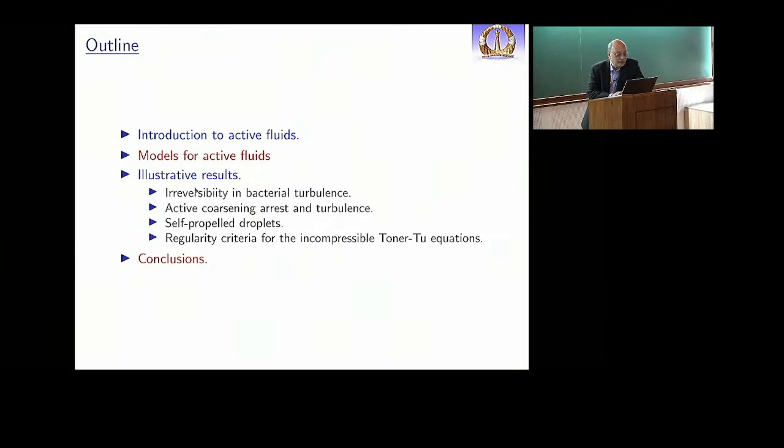Here is an outline of my talk: first, the introduction which most of you do not need, then the models—only to outline the models that I will be looking at—and then some illustrative results. Turbulence requires inputs from experiments, from physicists, from fluid dynamicists, and mathematicians. I will give you examples here of irreversibility in bacterial turbulence, active coarsening arrest and turbulence, a model in which we get self-propelled droplets without recourse to any sort of polar or nematic ordering, and then somewhat mathematical discussion of regularity criteria for the incompressible Toner-Tu equations.